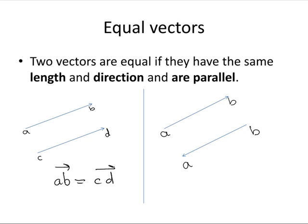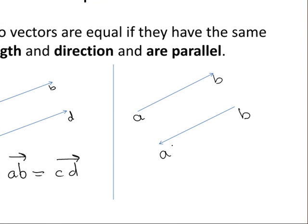So we have the vector AB. Now over here these vectors are not equal and I'll show you why. So this is the vector AB. This is actually the vector BA because that's the direction it's pointing in.